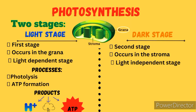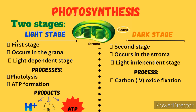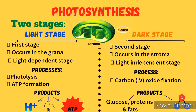The dark stage is the second stage, occurring in the stroma, and is the light-independent stage. The main process is carbon dioxide fixation, which leads to the formation of food substances such as glucose, proteins, and fats, with the release of water. The energy for this process is provided by ATP — adenosine triphosphate.